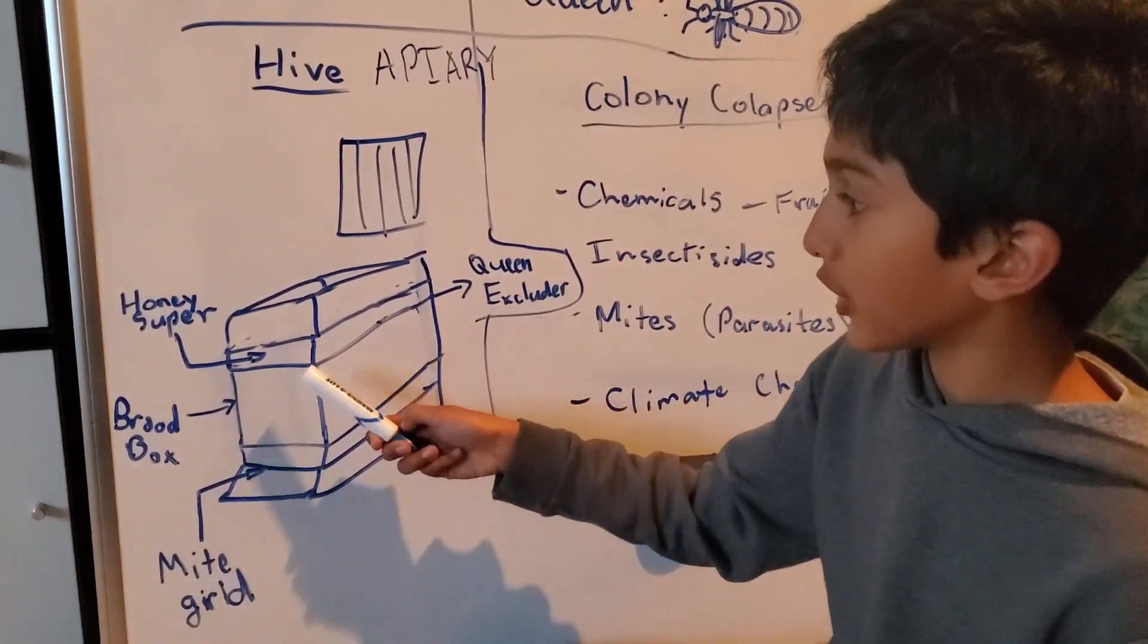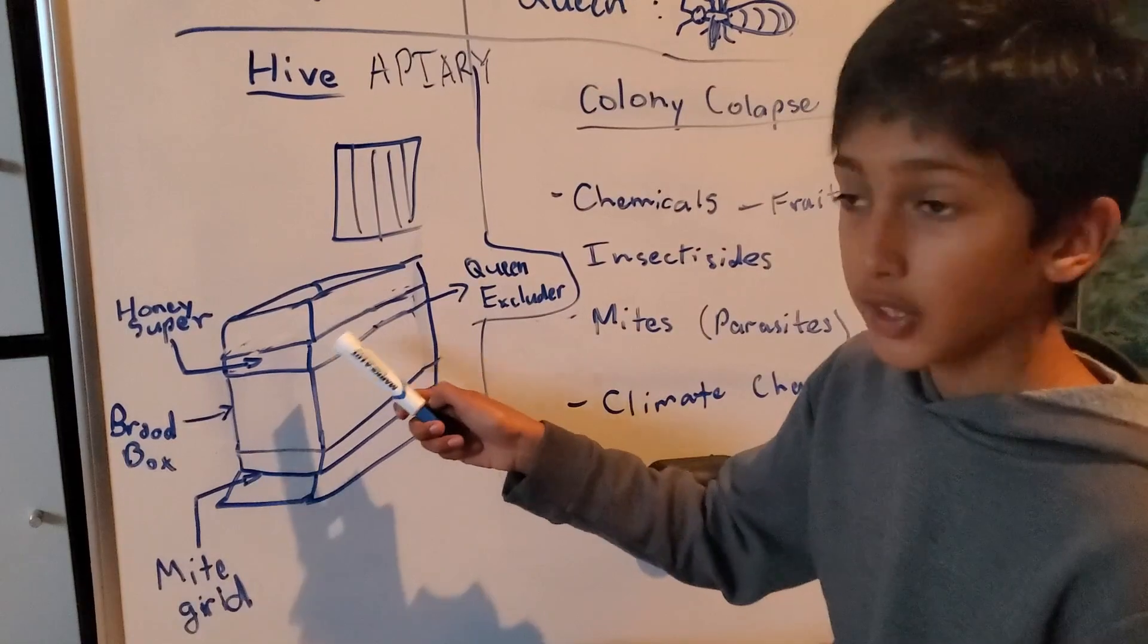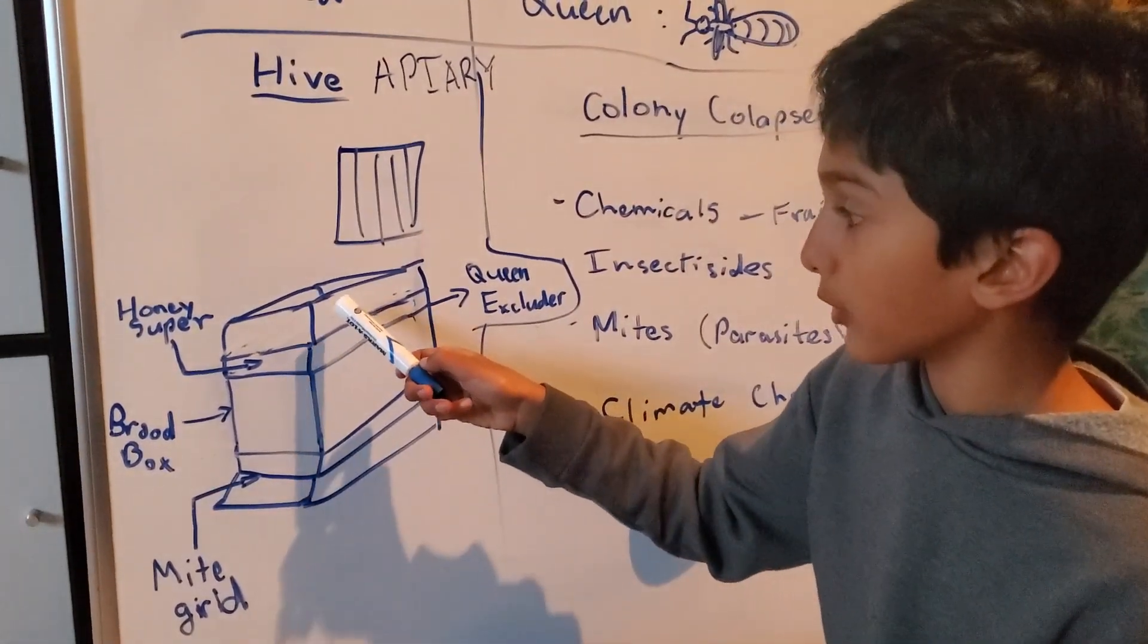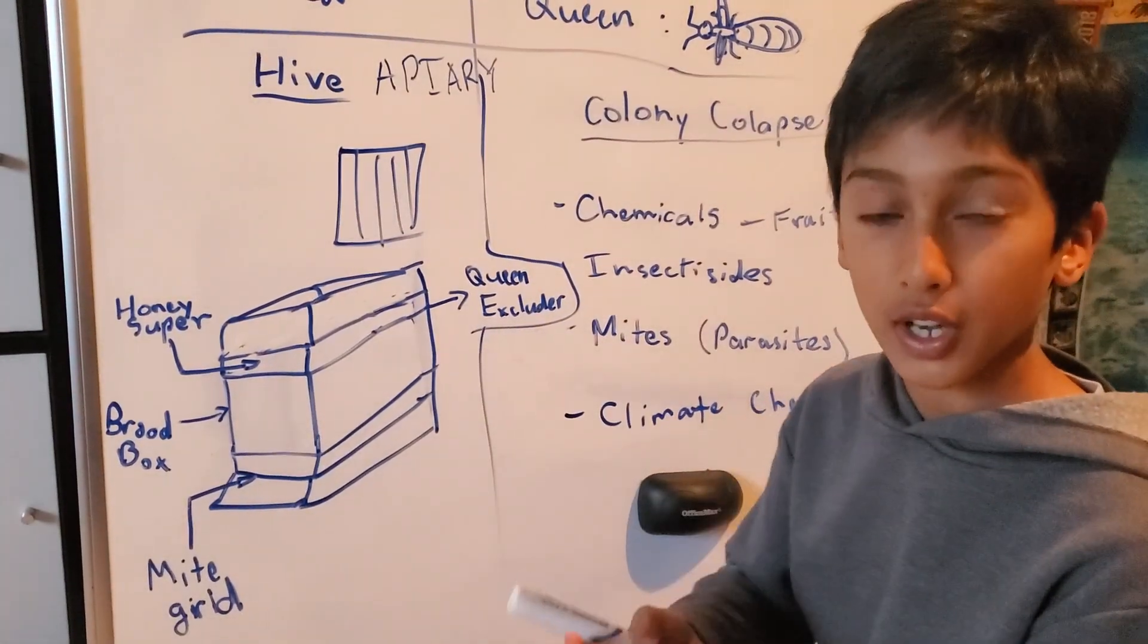Right above that is the honey super. The honey super is where all of the worker bees make the honey. And on top of that, we can even open the top and harvest the honey.